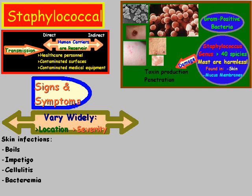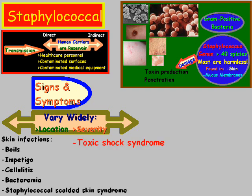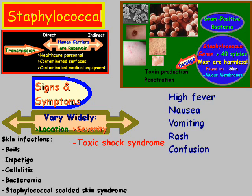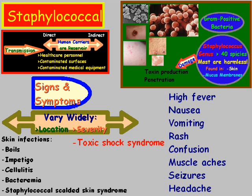We also have Staphylococcal Scalded Skin Syndrome, which mostly affects newborns and presents with fever, rash, and blisters. Then there's toxic shock syndrome, which is composed of high fever, nausea, vomiting, rash, confusion, muscle aches, seizures, and headache.